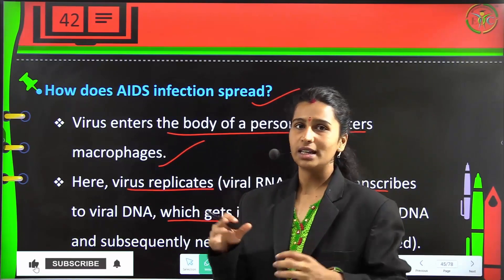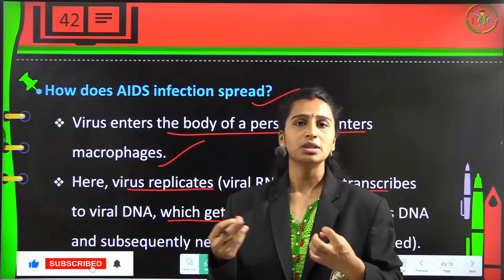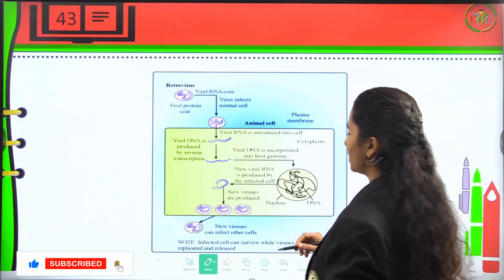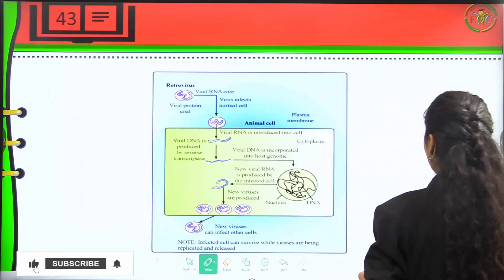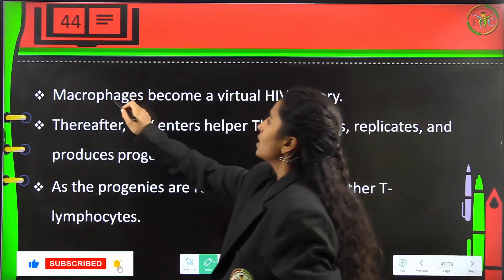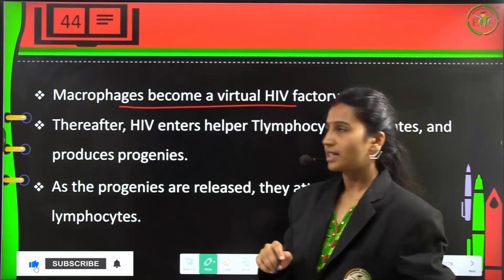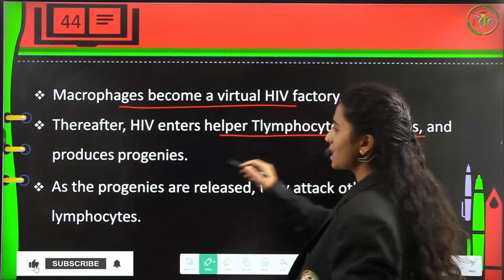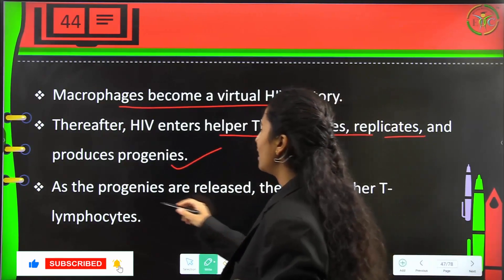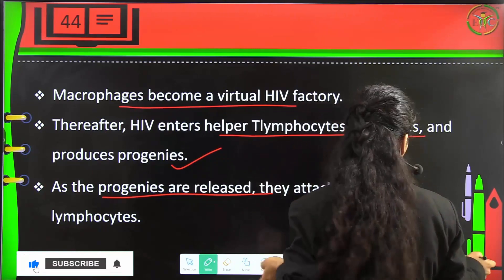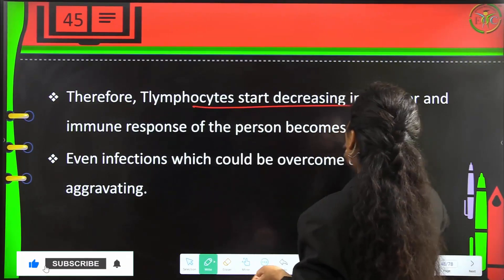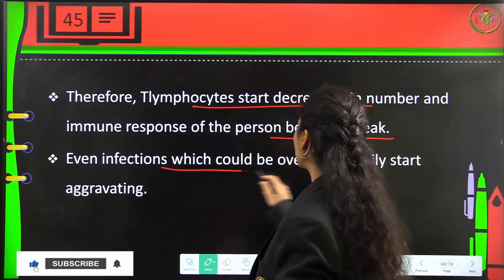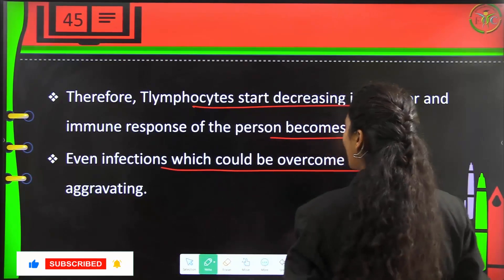The viral DNA is very similar to our own DNA — it reverse-transcribes, becomes DNA itself, mixes with the cell, and starts multiplying. This is the cycle by which a retrovirus converts to DNA. These macrophages become a virtual HIV factory. HIV then enters T-lymphocytes, replicates, and produces progenies that attack other T-lymphocytes, causing them to decrease in number. The immune response weakens, and even easily overcome infections start aggravating.